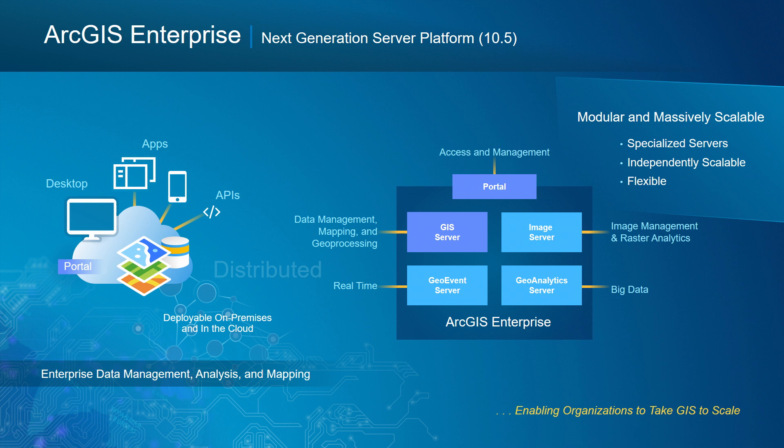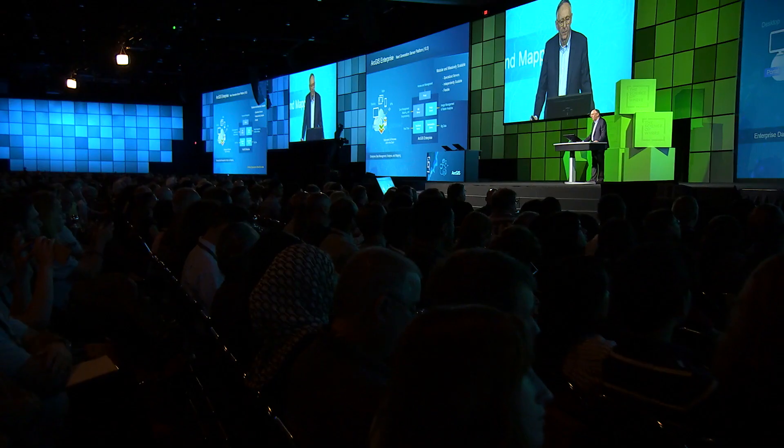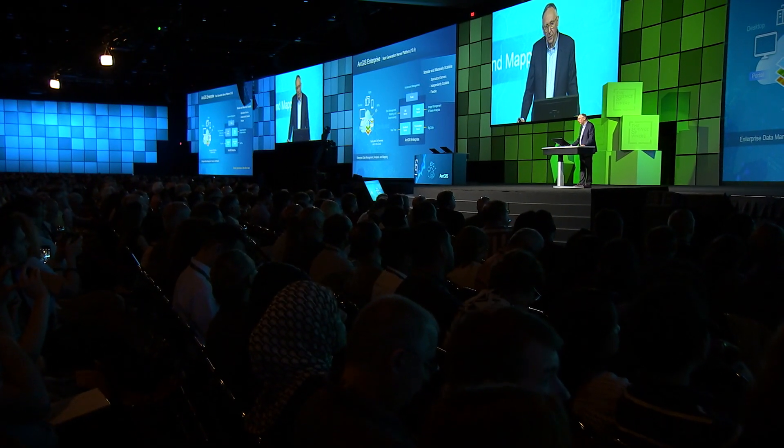The third leg on this stool is ArcGIS Enterprise. Last winter we released a new next-generation server platform, 10.5. It included Portal — that experience that organizes all aspects of a GIS — and the GIS Server that users have been used to in the past. But this architecture is new and different. You may not experience it that way initially because it's a seamless rollover, but this architecture is modular and massively scalable.